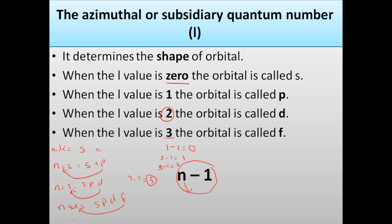The orbitals also increase as n increases. If n = 1 then we have s; if n = 2 we have two orbitals s and p; if n = 3 we have three orbitals s, p, and d; if n = 4 we have four orbitals s, p, d, and f. This is the information that the azimuthal quantum number, denoted by l, provides — information about the shape of the orbital.